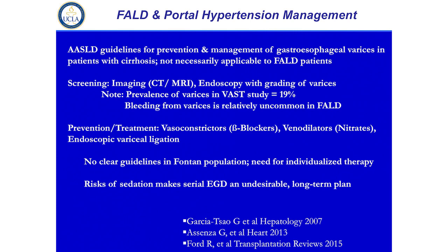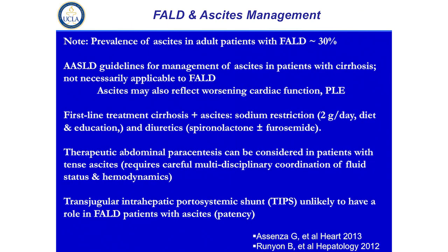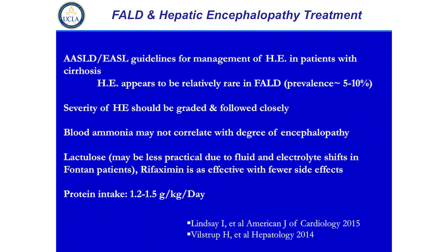The modalities that we have available — beta blockers and venodilators — can be really challenging for these patients. Endoscopy or serial endoscopy with banding or sclerotherapy, and undergoing repeated anesthesia, are not the best options but are certainly available to help manage or bridge towards at least heart-liver consideration for patients. For ascites in general, our first-line treatments would be sodium restriction and diuretics — aldactone or Lasix. Abdominal paracentesis is really used for tense ascites as it can be transient and may be associated with protein-losing enteropathy. TIPS has a very limited role in these patients because of their complex anatomy.